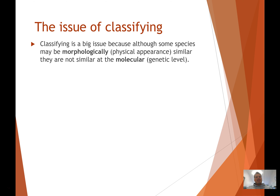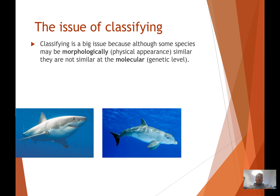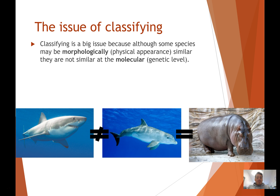There are a few issues in classifying. Issues arise when morphologically — so the physical appearance of something — is very similar, but they're not similar at the molecular, genetic level. A great example of this is sharks and dolphins. Sharks and dolphins, morphologically, look very, very similar, but they're not at all related at the genetic level. Dolphins are actually much more closely related to hippopotamuses — the hippopotamus is actually the closest living relative of whales and dolphins that lives on land. So it's really important to note that the molecular, genetic level always takes precedence — just because something looks the same doesn't mean it's classified together.